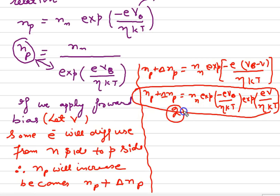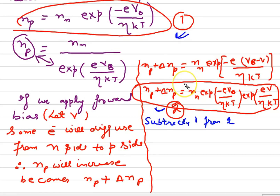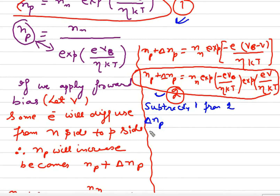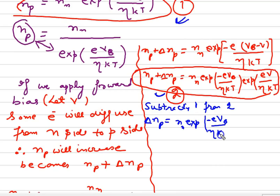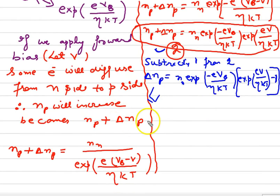Subtracting equation one from equation two gives delta NP equals NN times exponential of minus eVB over eta KT, multiplied by the quantity exponential of eV over eta KT minus one. So delta NP represents the small number of electrons that diffused from the N side to the P side, constituting the diffusion current.